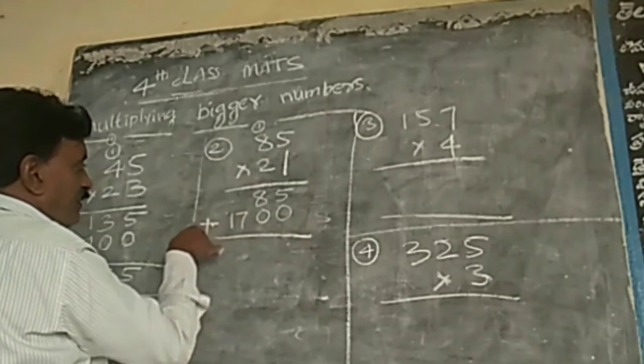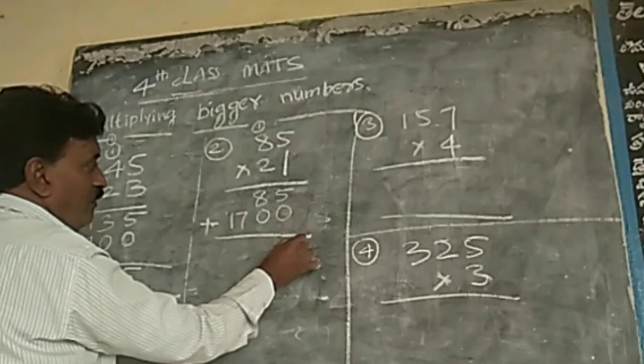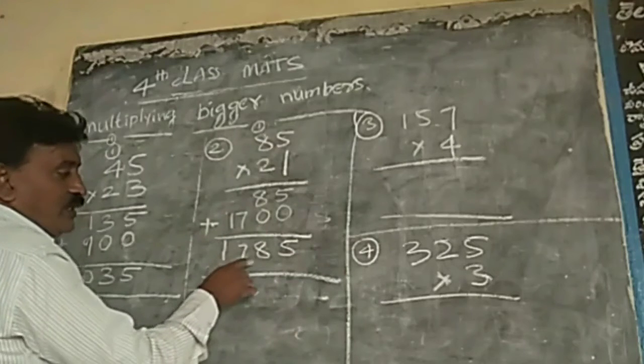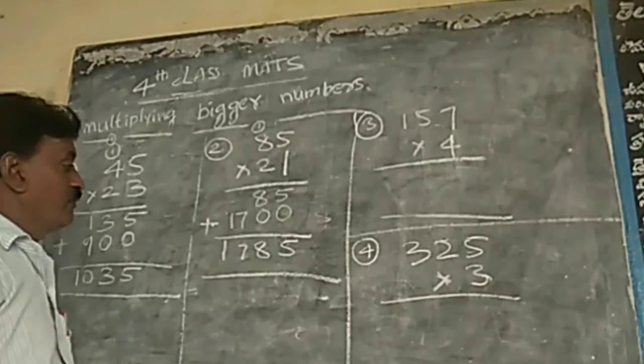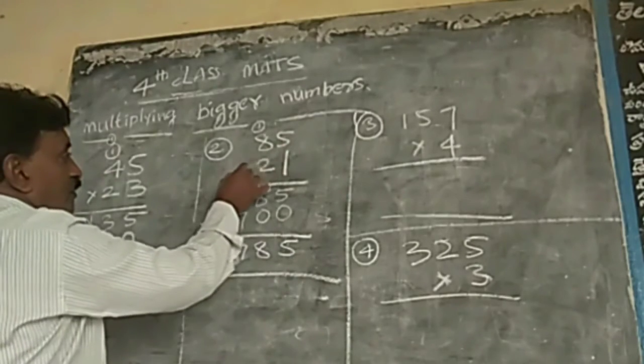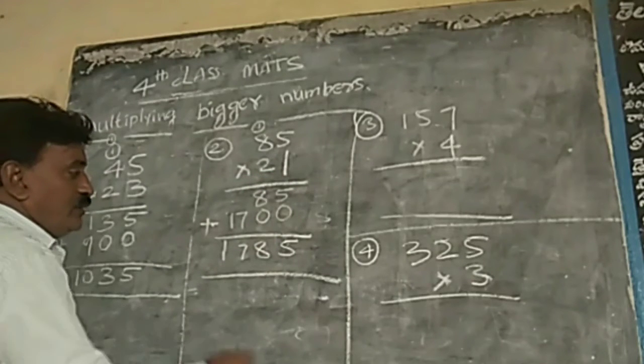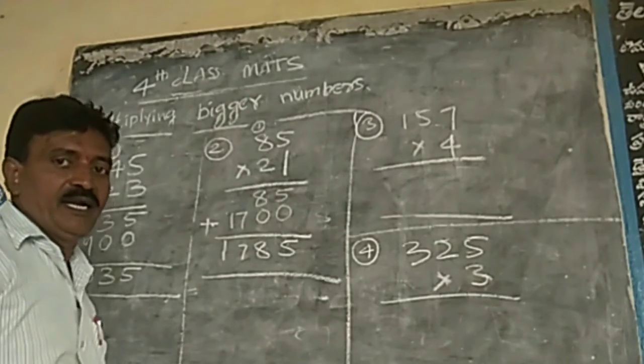Next, add. 5 plus 0, 5. 8 plus 0, 8. 7, 1. 1,785. 85 multiplied by 21. Answer is 1,785.